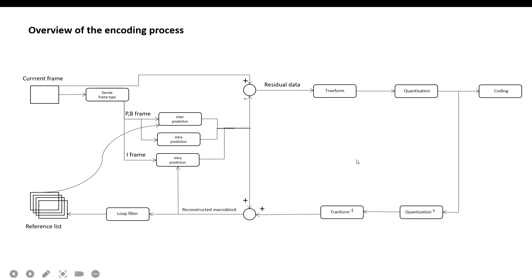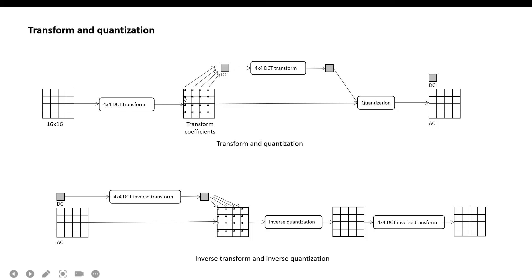For transform and quantization, for each 16x16 macroblock, it performs sixteen 4x4 DCT transforms. A second transform is applied to the lowest DC frequency coefficients of the first transform, because these DC values tend to be highly correlated and the second transform improves coding performance. The DC coefficient block is further transformed using a 4x4 Hadamard transform. Then it performs quantization on the 4x4 DC block and the 16x16 AC block. This is the forward transform and quantization process, and the inverse transform and inverse quantization process is very similar.